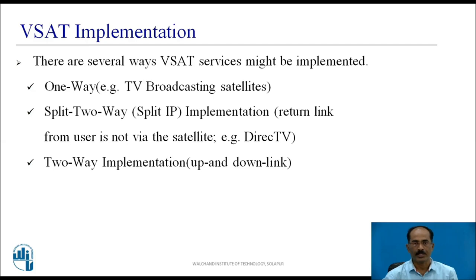VSAT Implementation. There are several ways VSAT service might be implemented. The first is one-way, used for TV broadcasting satellites where there is only transmission of signals — no reception, just one-way transmission. The second is split two-way, also called split IP implementation, where the return link from the user is not via the satellite. An example of this is DirecTV.